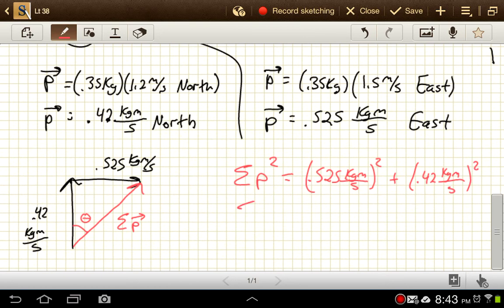So this gives me a magnitude for my momentum vector of 0.525 squared plus 0.42 squared. And then I'll square root my answer, 0.672 kilogram meters per second. So there we go.